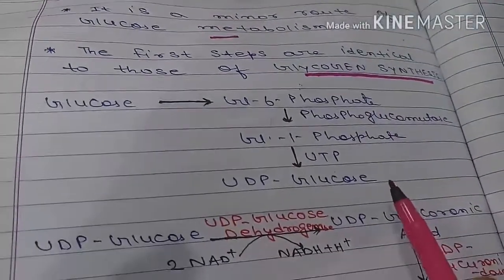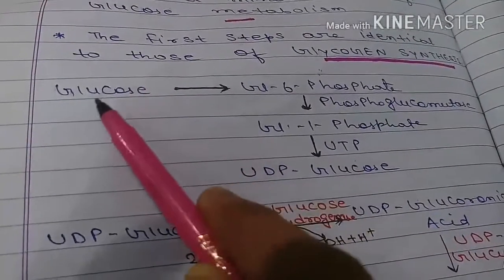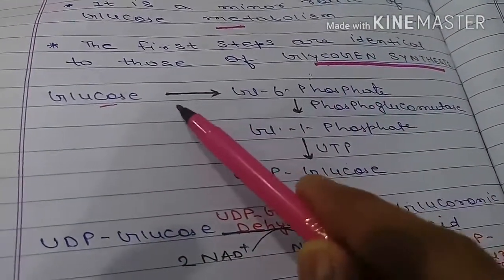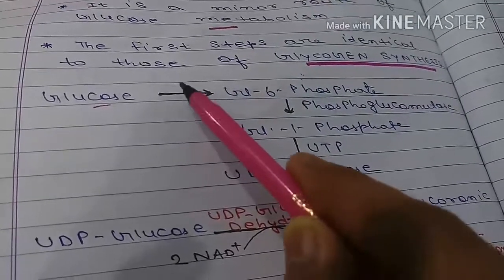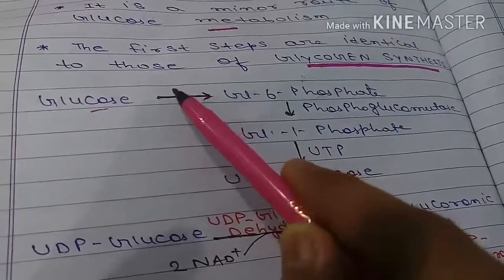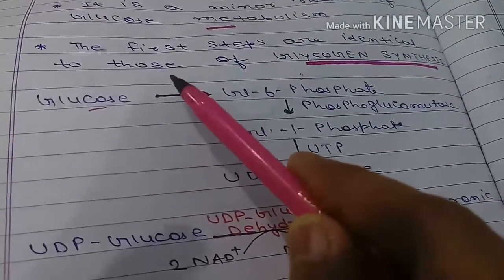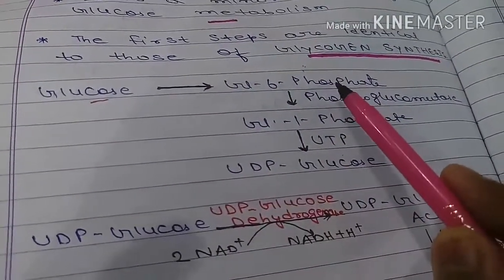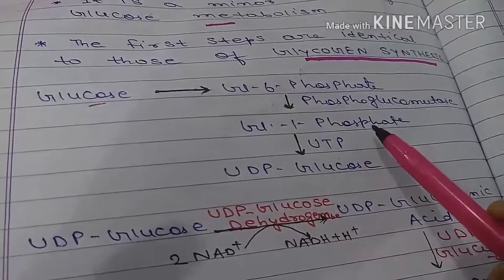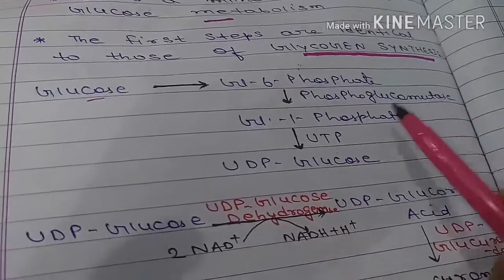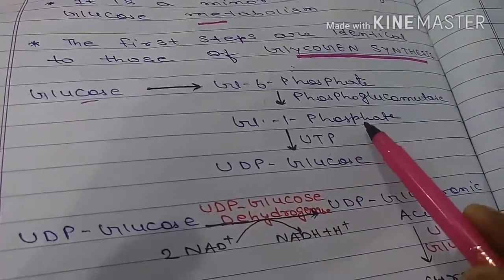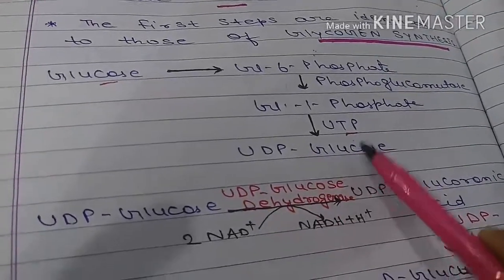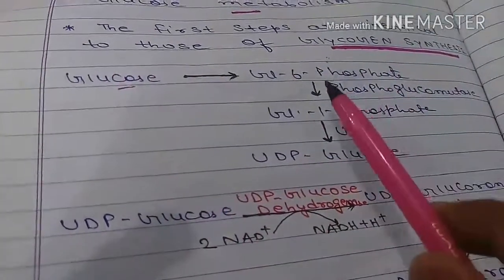The initial steps are the same. Glucose is converted into glucose-6-phosphate, where ATP is utilized and the enzyme is hexokinase or glucokinase. This glucose-6-phosphate is then converted into glucose-1-phosphate by phosphoglucomutase. Glucose-1-phosphate is then activated by UTP, and the product is UDP-glucose — this is the basis of glycogen synthesis.